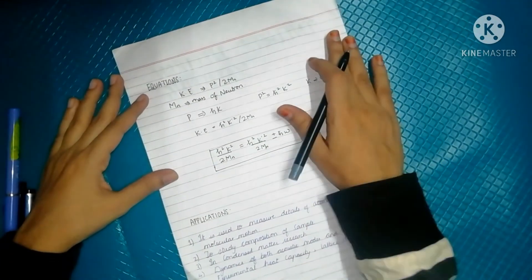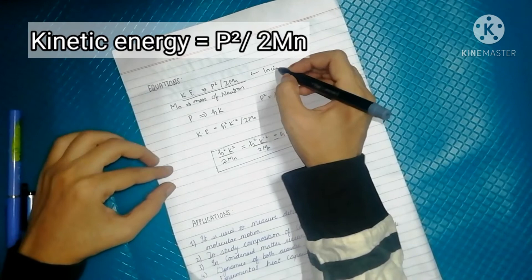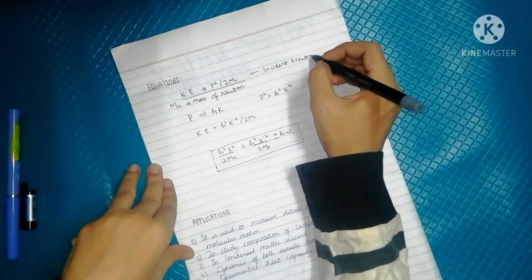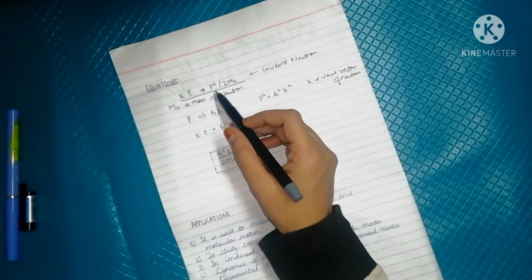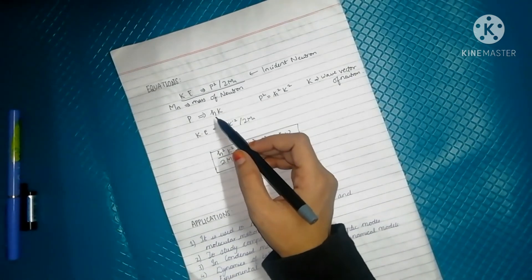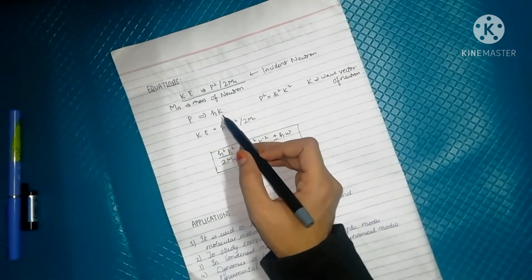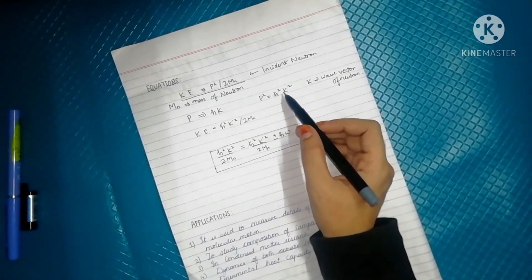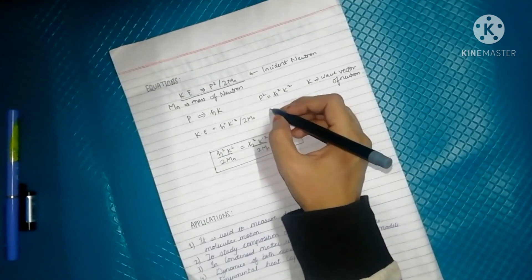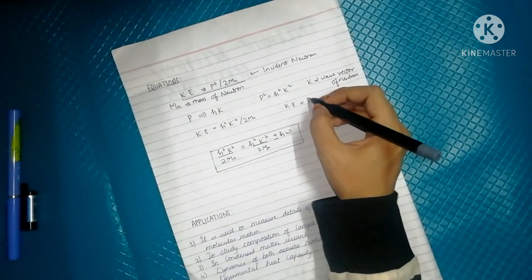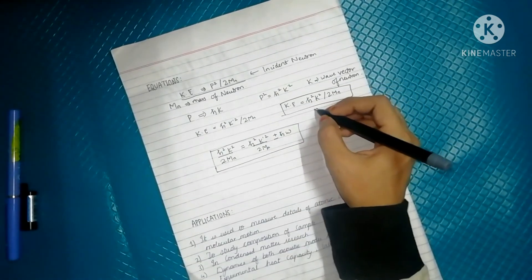Now let's look at the equation. This is the kinetic energy of the incident neutron. M_n is the mass of neutron and P is the momentum. Momentum is represented as ℏK, where K is the wave vector of the neutron. So if P equals ℏK, then P squared is ℏ²K². The kinetic energy of the incident neutron will be ℏ²K² / 2M_n. This is for the incident neutron.